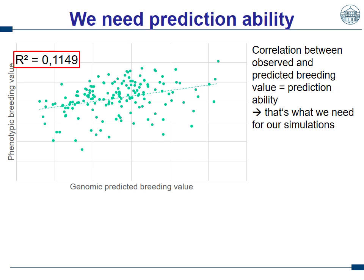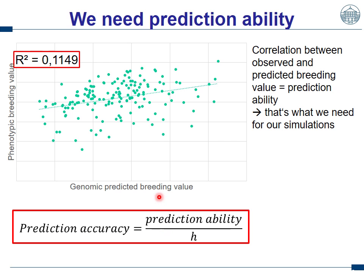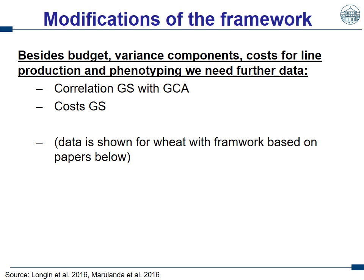When we look at the implementation of genomic selection, what we need at the end is a correlation between the observed and predicted breeding value — we have the genomic predicted breeding value of the population and the phenotypic breeding value, and then we get our correlation value, which is what we require to run a simulation. Be aware that prediction accuracy strictly speaking is this correlation divided by the square root of the heritability. Thus, when taking prediction accuracy estimates to the selection gain package, really check whether they represent prediction ability or whether you still need to calculate it based on heritability.